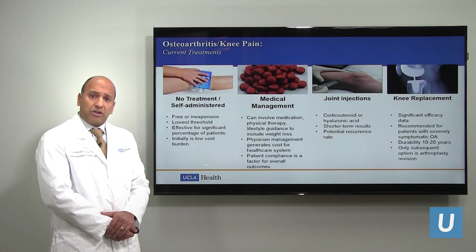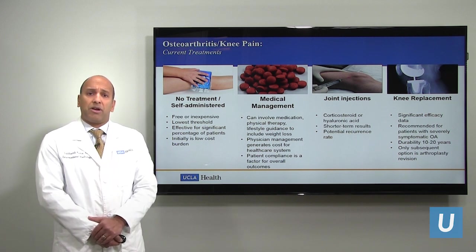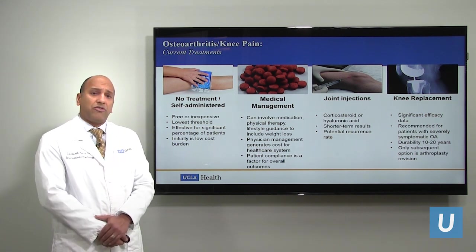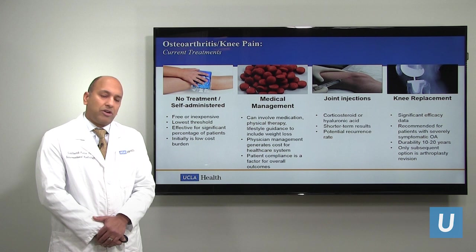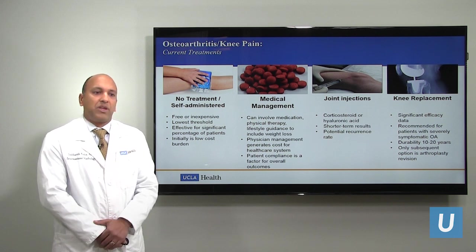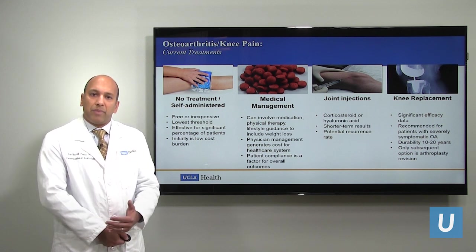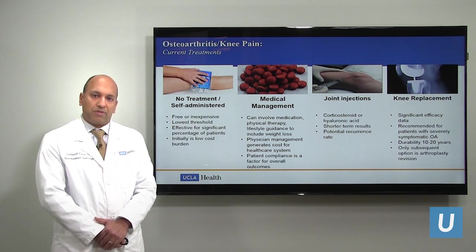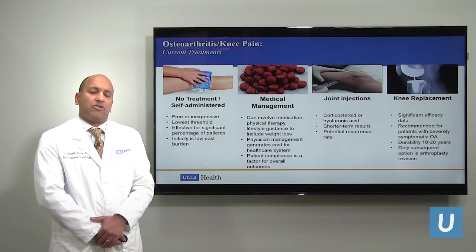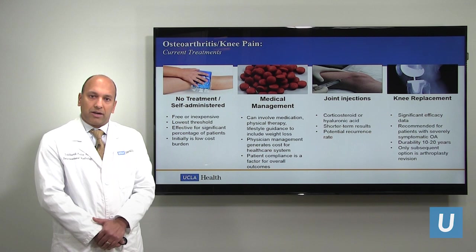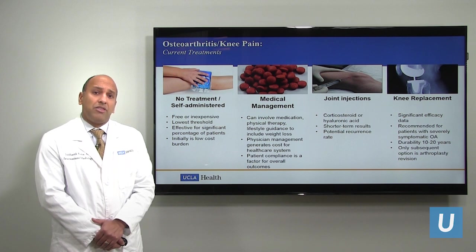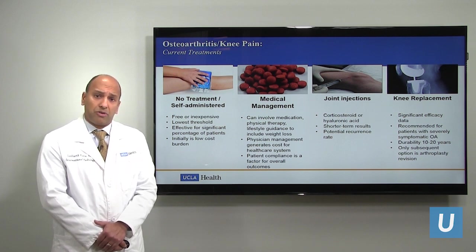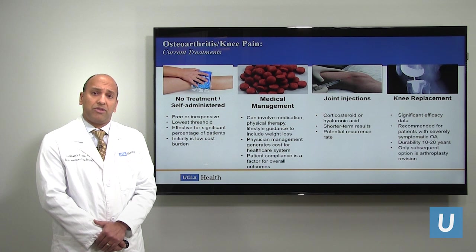There are multiple treatment options for the treatment of arthritis. On the left side, you have patients who have really conservative treatment, either no treatment or things that are self-administered at home. This could include things like bed rest or leg elevation, ice packs, and medical management includes things like non-steroidal anti-inflammatory drugs — examples include ibuprofen and naproxen. And in rare cases, people may need opiates or narcotics. On the other end of the spectrum, in patients with severe osteoarthritis, they may be good candidates for total knee arthroplasty or knee replacement surgery.